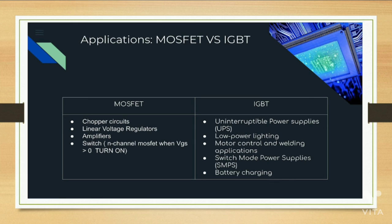Now we will see the applications of MOSFET and IGBT. The applications of MOSFET are: it is used in chopper circuits, linear voltage regulators, amplifiers, and as a switch. For an N-channel MOSFET, when VGS is greater than 0, it is turned on. The applications of IGBT are: it is used in uninterruptable power supplies (UPS), low power lighting, motor control, online welding applications, switch mode power supplies, and battery charging.